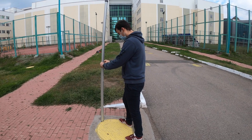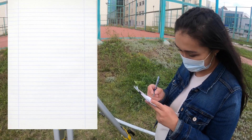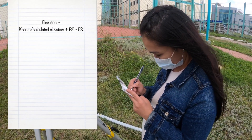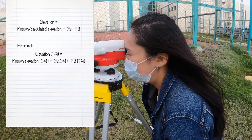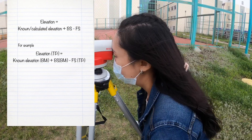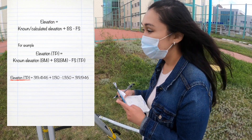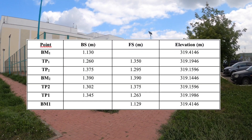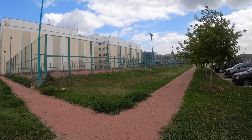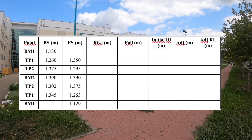We completed our lab work, and here are the measurements taken while moving backwards. Now about the calculation of elevation — we use a simple equation shown on screen. To calculate the elevation of turning point one, the backside is added to the already known elevation of the benchmark, and then the foresight at turning point one is subtracted from that sum. Putting in our measurements, the elevation of turning point one is 319.1946 meters. Here are the final results of the elevation calculation. In your lab report, you should calculate the reduced level using rise and fall methods with the measurements given for your group.